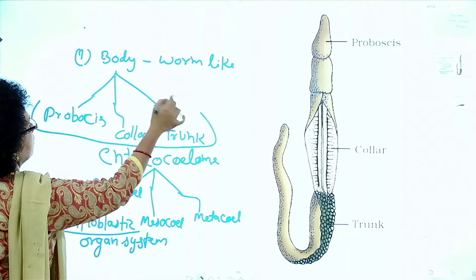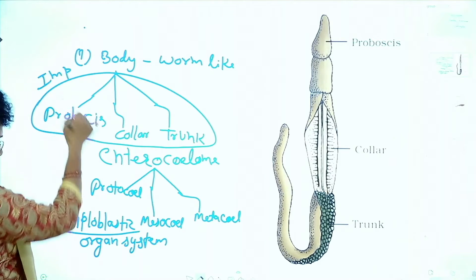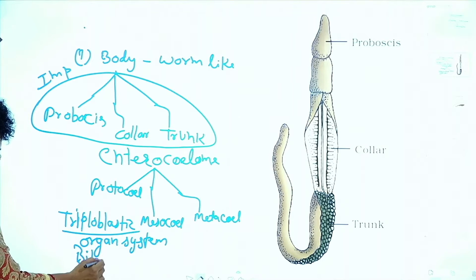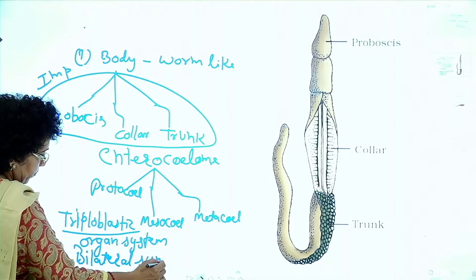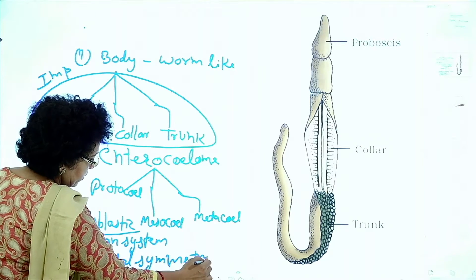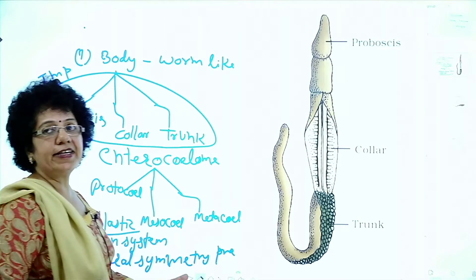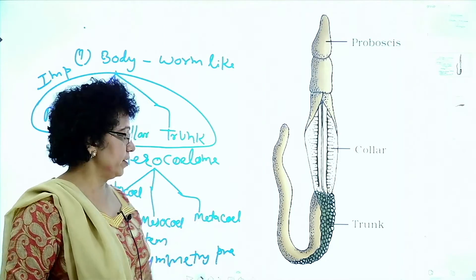The body is divided into proboscis, collar, and trunk. Next, bilateral symmetry is present. In all chordates, bilateral symmetry is present.